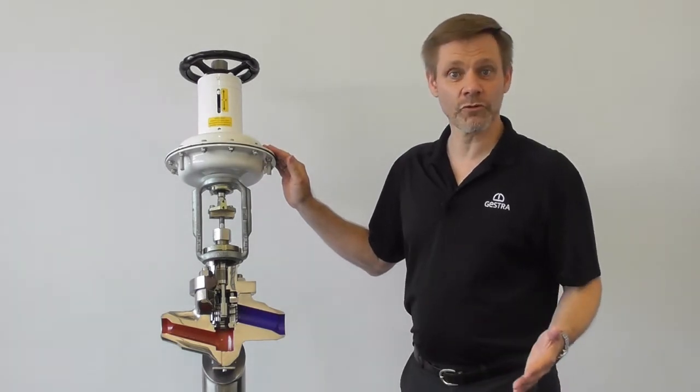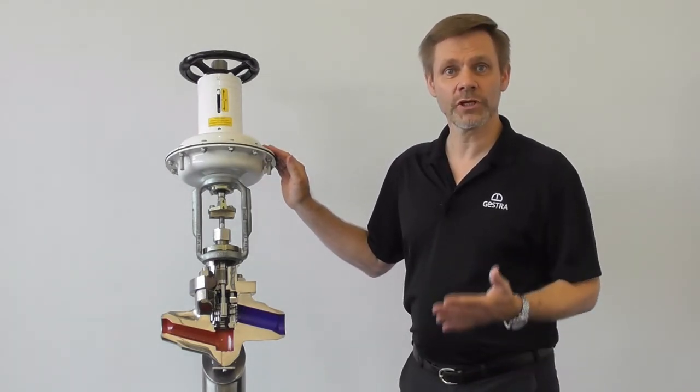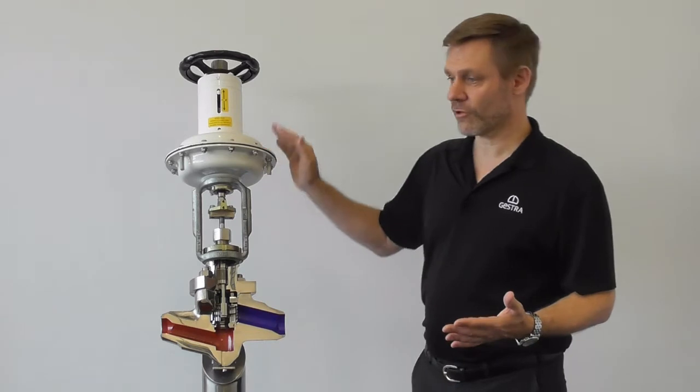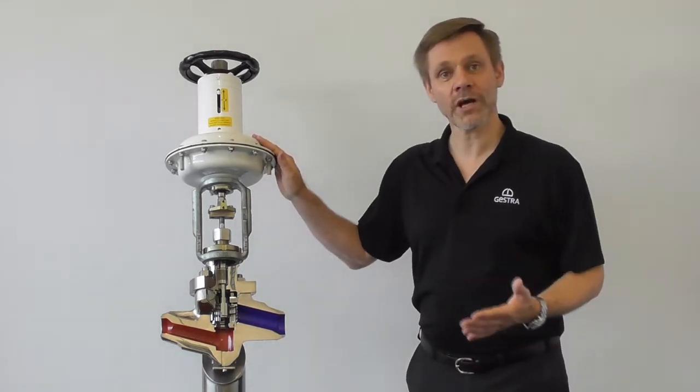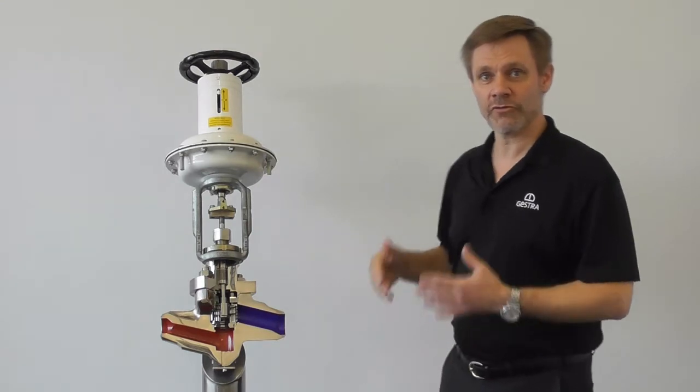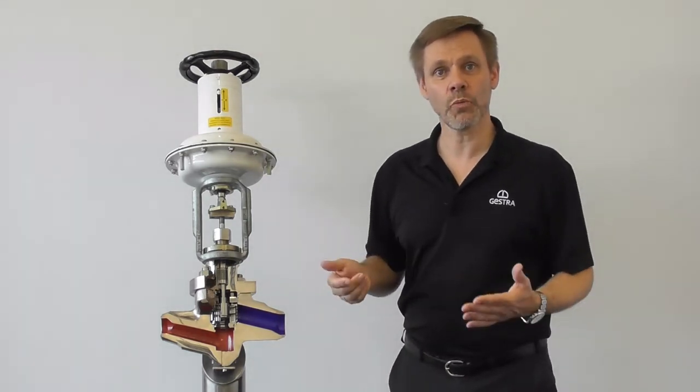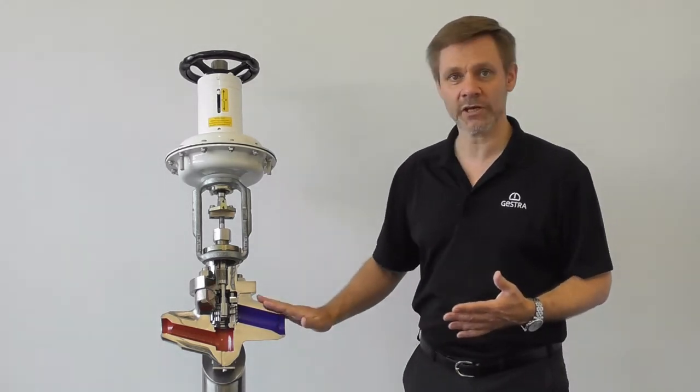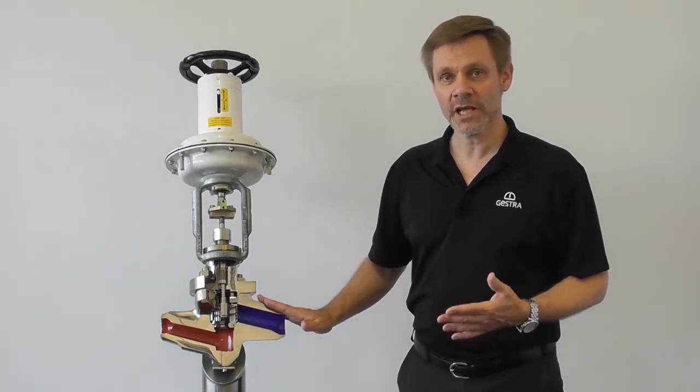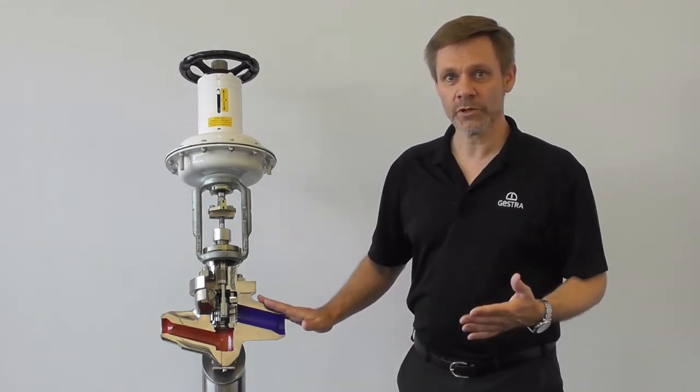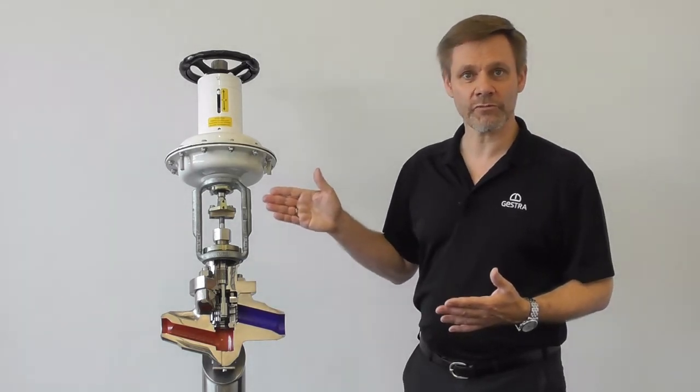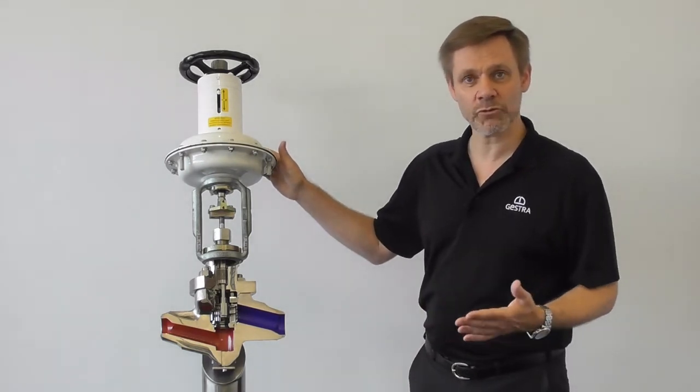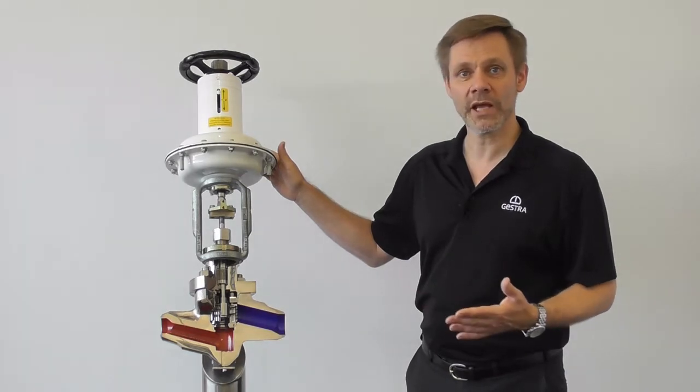The GESTRA control valves are an excellent solution for energy saving, to keep the productivity of your plant and to reduce the maintenance costs. It's a reliable valve in the size from 1 inch up to 6 inch. The trim design is suitable for differential pressures up to 100 bar or 1450 psi. Pressure class is class 900, nominal pressure PN160. And we have the opportunity to equip the valve with different types of actuators. On one hand, here we see a pneumatic diaphragm actuator. Even electric actuators are possible or simple hand wheels.